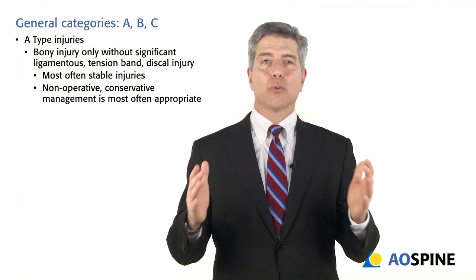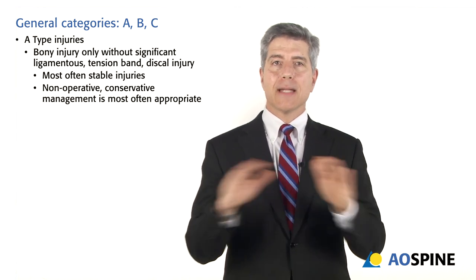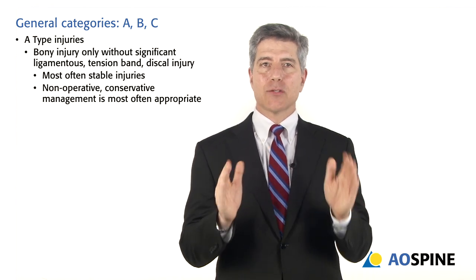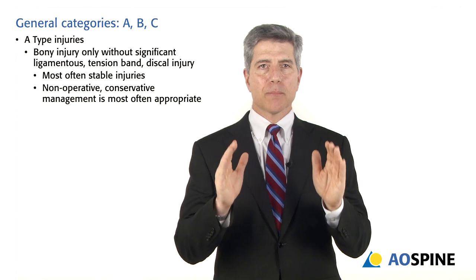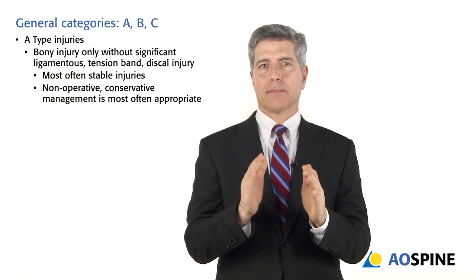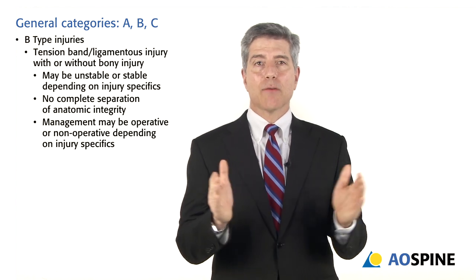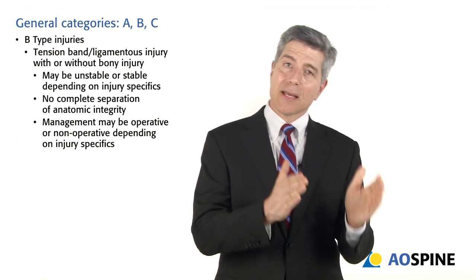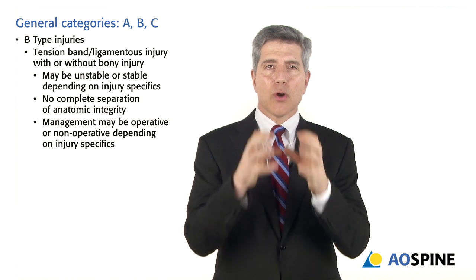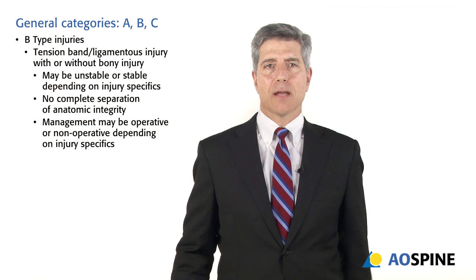We use A, B, and C subcategorizations. Type A is any bony injury without significant ligamentous tension band injury — bone only, no significant ligamentous disruption. Type B is a tension band injury; it may or may not have a bony injury and can be stable or unstable. It may or may not need surgery, but you know you have a tension band injury and must be very careful in its management.